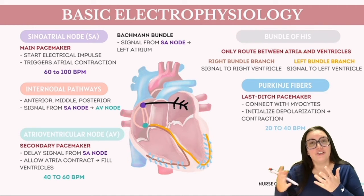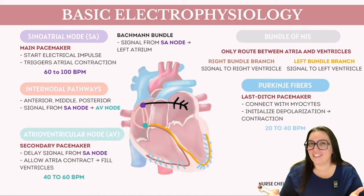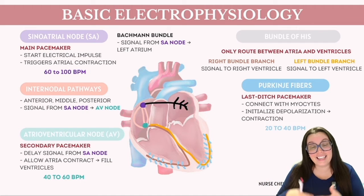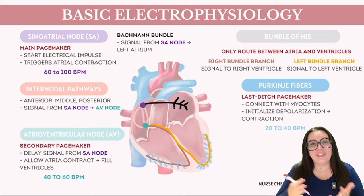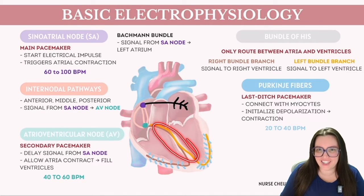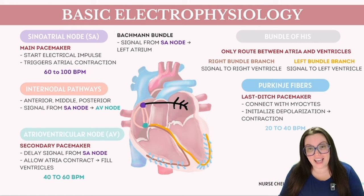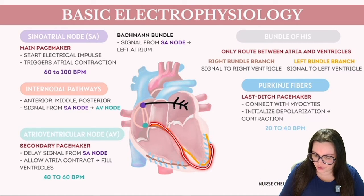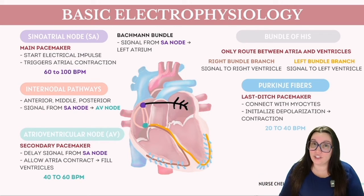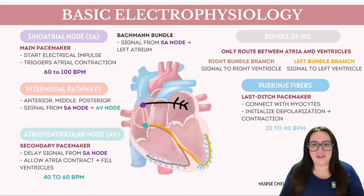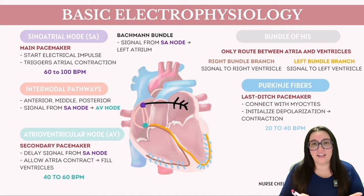Following the AV node, we encounter the bundle of His, comprised of high-speed transmission cells extending from the AV node and traversing partially through the wall of the right atrium before encountering the interventricular septum, where they branch off to both the left and right ventricles. In individuals without cardiac abnormalities, this pathway represents the sole communication channel between the atria and the ventricles.